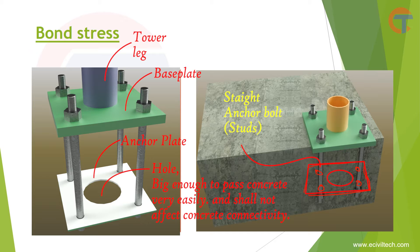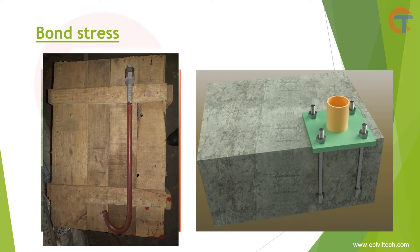The main function of the anchor plate is to transfer tension force from the bolt to the foundation. We can use an anchor plate here, but we are not going to use it in this particular design — I will show you in some other calculation. We can also use J-bolts instead of straight bolts, but for the sake of simplicity we are going to use only straight bolts. I will explain J-bolts in some other video.